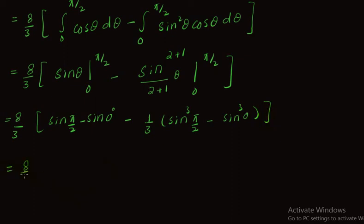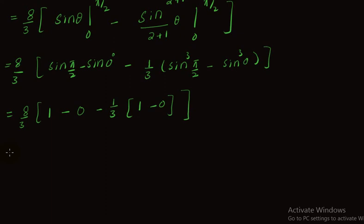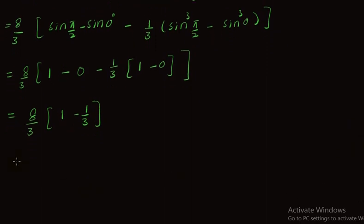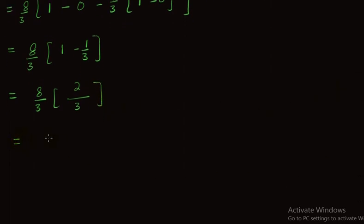This simplifies to (8/3) times (1 minus 1/3), which equals (8/3) times (2/3), giving a final answer of 16/9.